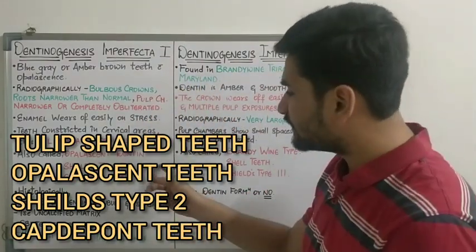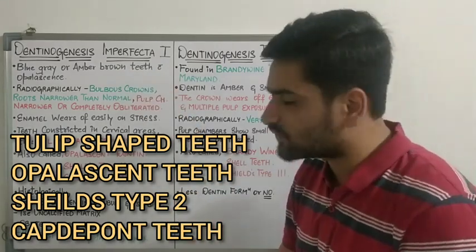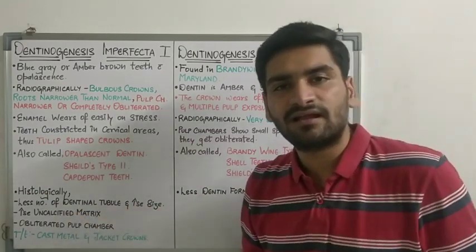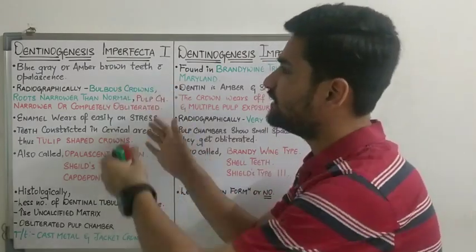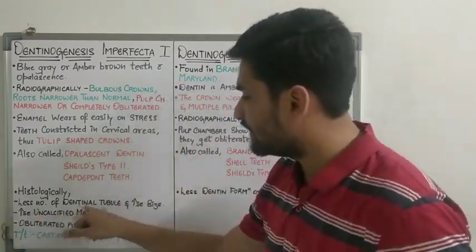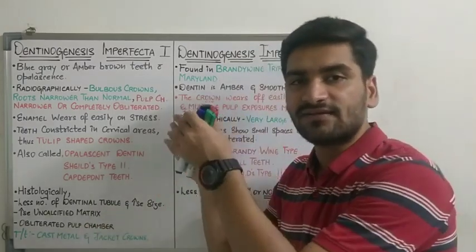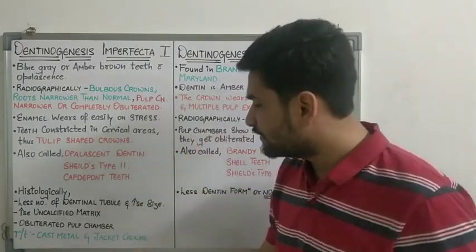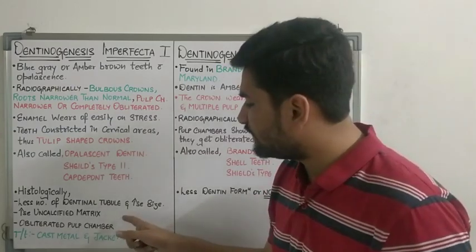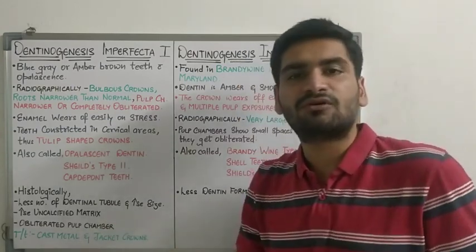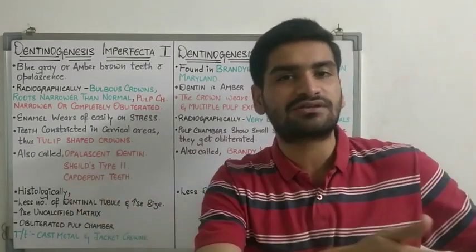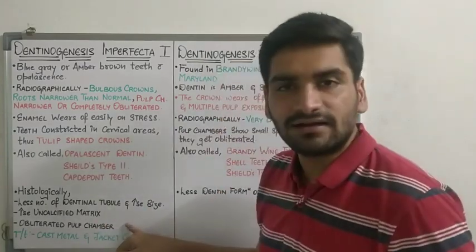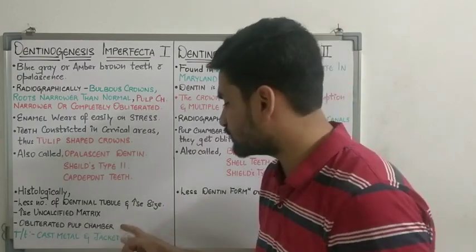This can also be called opalescent dentin, Shields type 2, or capty point teeth. Histologically, if you compare the teeth of DI type 1 with normal teeth, there are fewer dentinal tubules, and the tubules in DI1 are increased in size compared to normal. So tubules are fewer but larger in size. There is not normal formation of dentin matrix, and there is an increased amount of uncalcified matrix - if calcified matrix is less, strength is going to decrease.